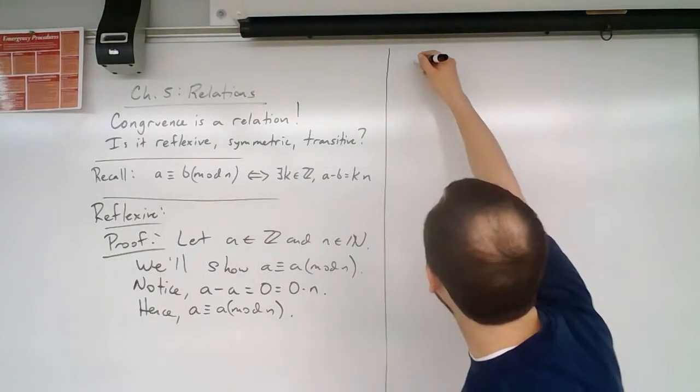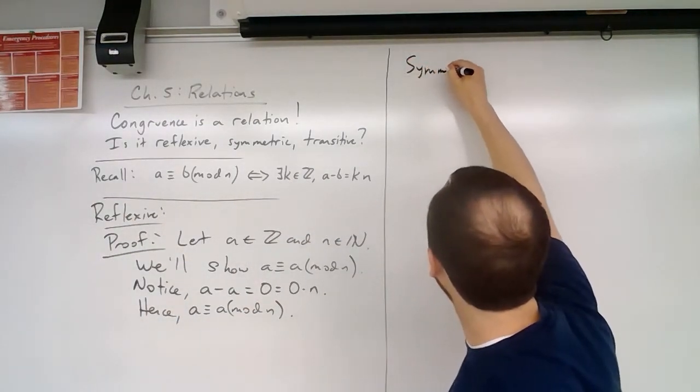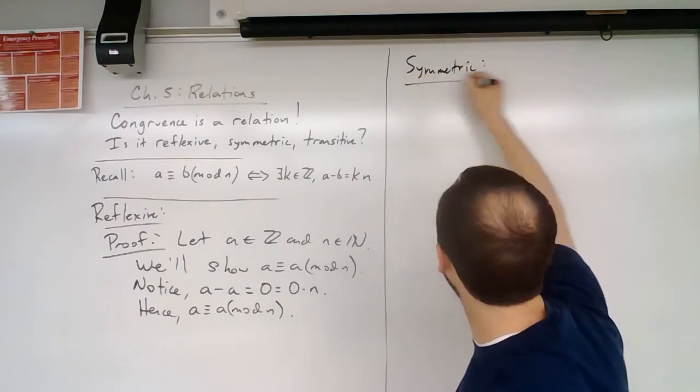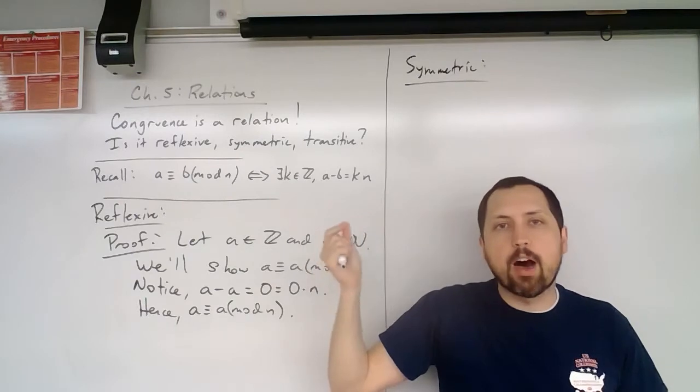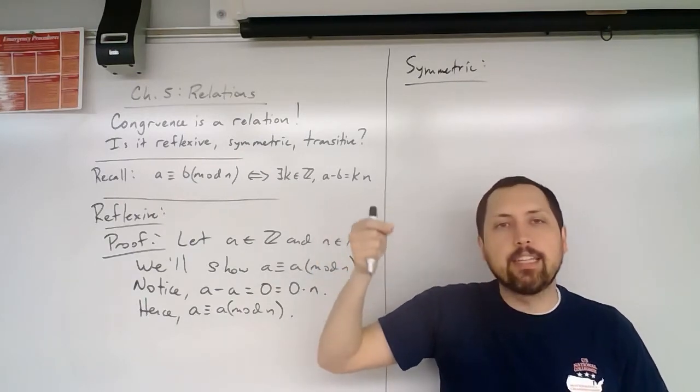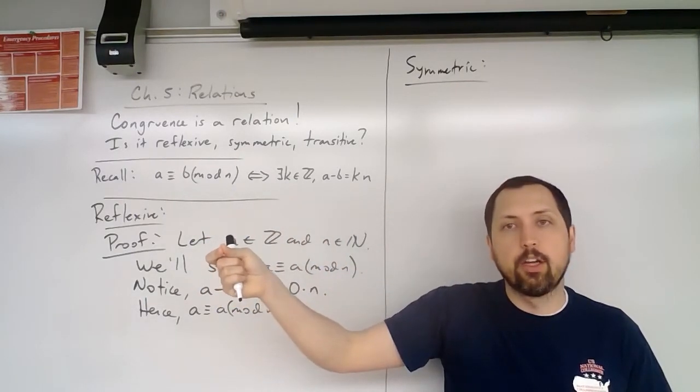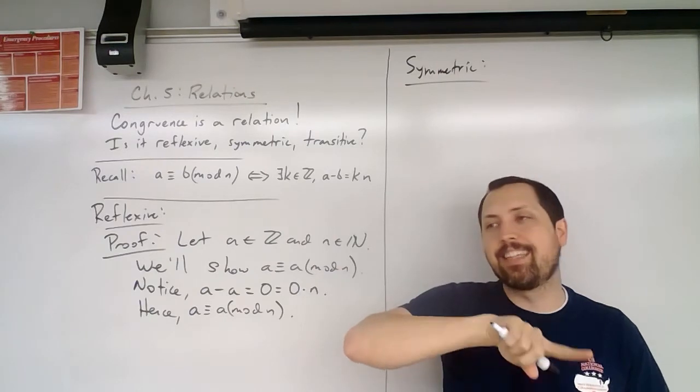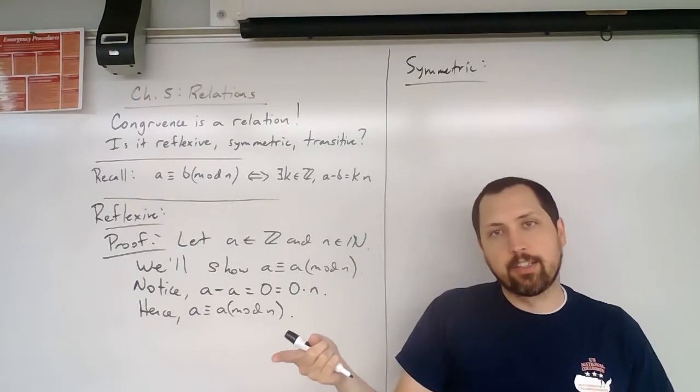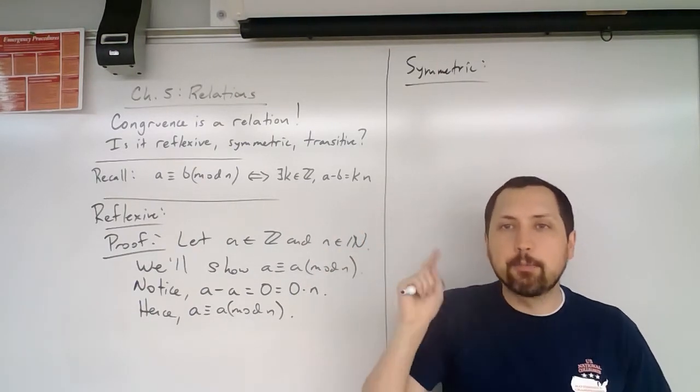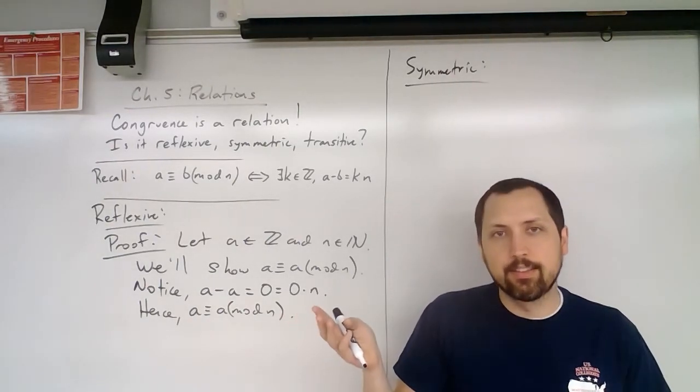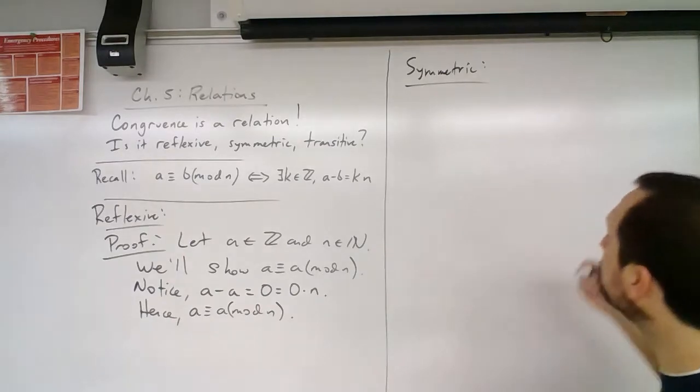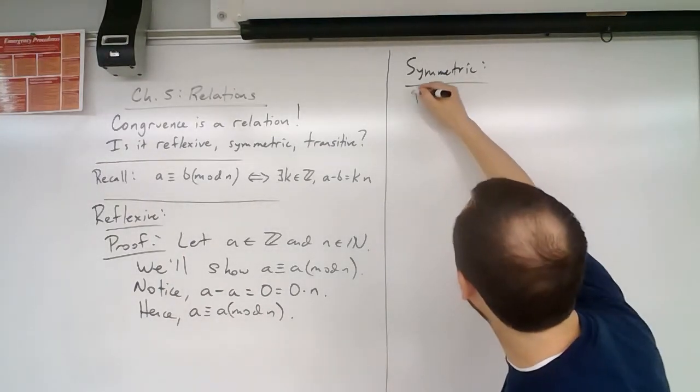So then when it comes to symmetric. If a is congruent to b mod n, does that mean that b is congruent to a mod n? Or in other words, if a has the same remainder as b when it's divided by n, does b have the same remainder as a when it's divided by n? Well, yes, hopefully we have that intuition as well. So we're going to need a proof here.